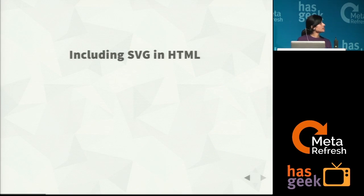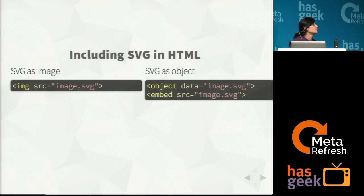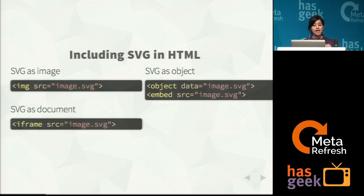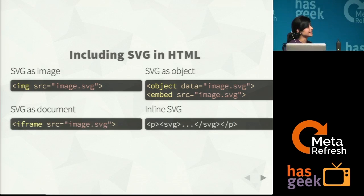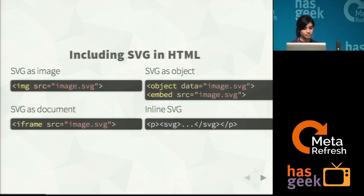Ways to include SVG in your HTML: with XHTML you could use it as an image, as an object with the object or embed tag, or as a document with the iframe. With HTML5 you can use it directly within your document. We'll be speaking more about inline SVG in this session.